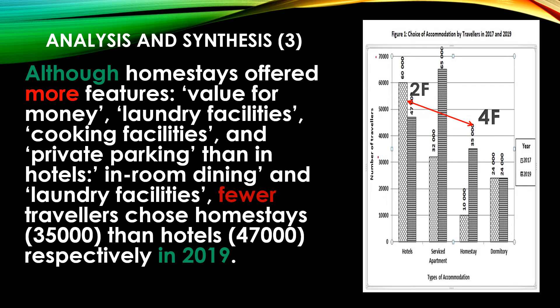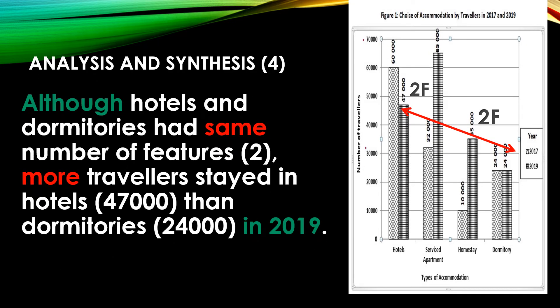Sample number four: 'Although hotels and dormitories had the same number of features, more travelers stayed in hotels (47,000) than dormitories (24,000) in 2019.' Same key features, but different number of travelers.